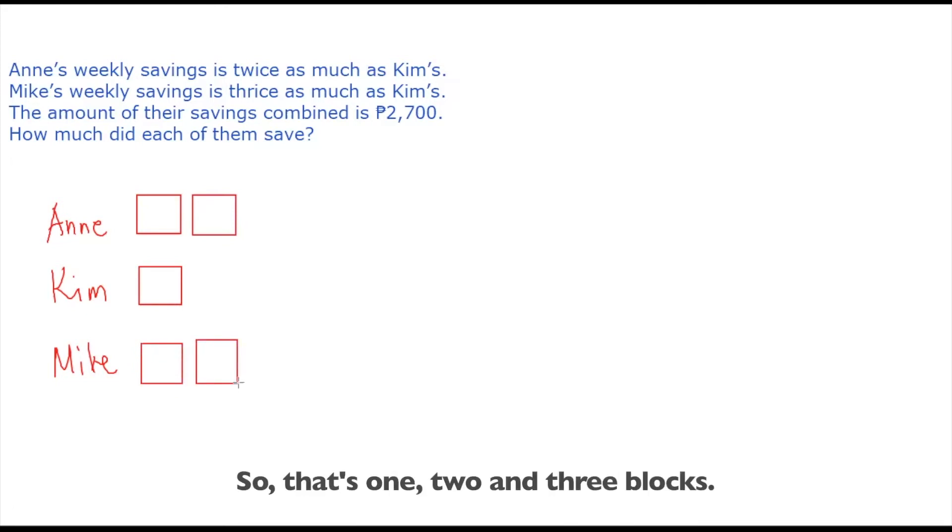So that's one, two, and then three blocks. Okay, so that's three blocks for Mike's weekly savings.